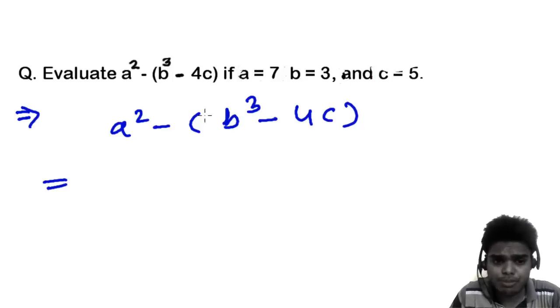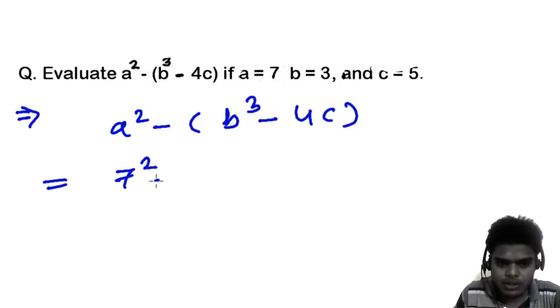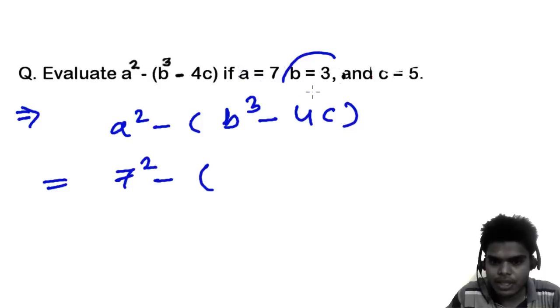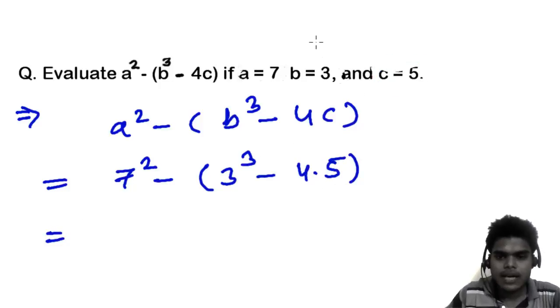This is a squared minus, inside the bracket, b cubed minus 4c. We know the value of a, b, and c, so let's put these values first. a equals 7, so I'm gonna write 7 squared minus, inside the bracket, b equals 3, so 3 cubed, and then c equals 5, so 4 times 5.